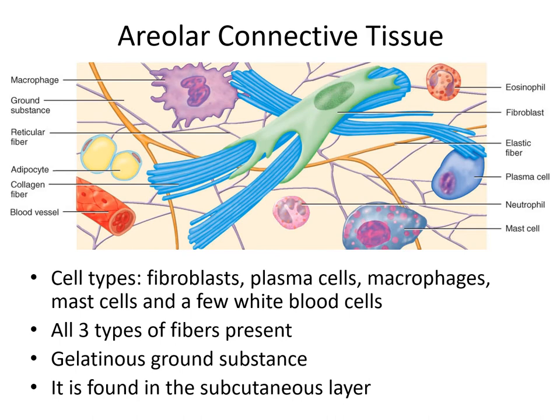Eosinophils, plasma cells, and neutrophils are all forms of white blood cells found in areolar tissue. Eosinophils attack parasites. Neutrophils launch attacks against foreign cells and substances. Plasma cells produce antibodies that play a major role in the immune response. Mast cells can release histamine, dilating blood vessels and increasing blood flow so that more white blood cells can reach the tissue if there's infection or damage. Fibroblasts wander around constructing fibers, maintaining and repairing the tissue.